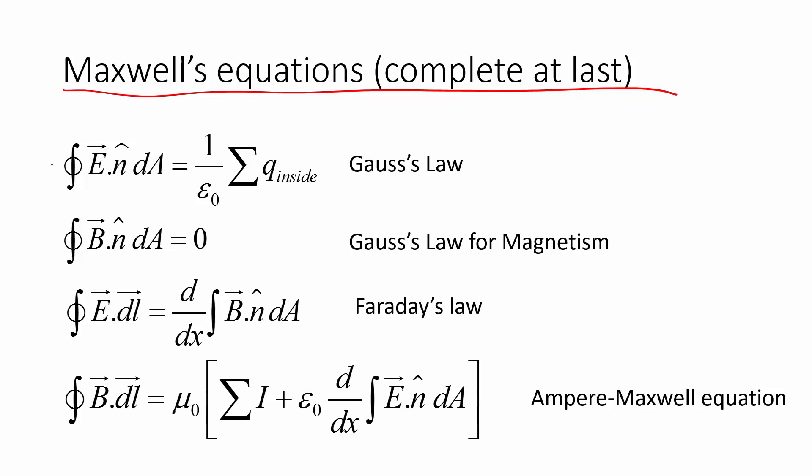We have the two surface integral equations. Gauss's law, telling you that the surface integral of an electric field over an area tells you the charge inside. Gauss's law for magnetism, telling you the surface integral of magnetic field over a surface equals zero, because there are no monopoles.